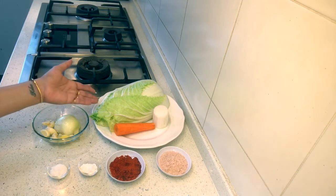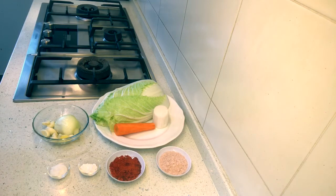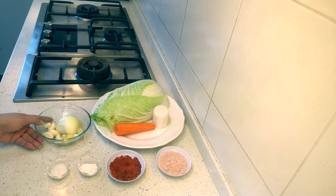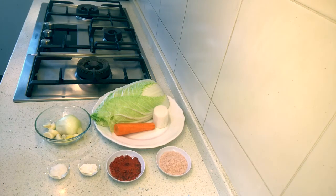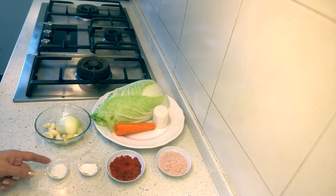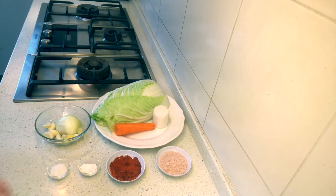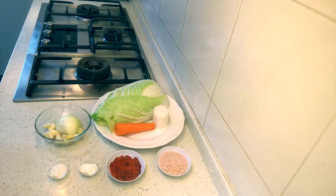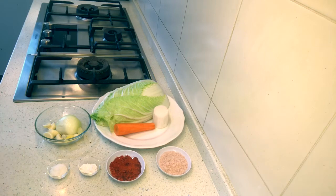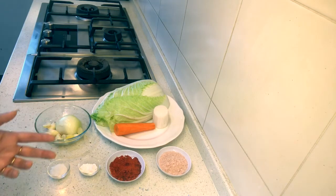So let's see what all we need for this. We'll need half a kg of napa cabbage, one medium sized carrot, one fourth of radish, half a white onion, seven to eight cloves of garlic, half an inch of ginger, one teaspoon sugar, one teaspoon rice powder, one and a half teaspoon of red chili powder, and one fourth cup of Himalayan rock salt.